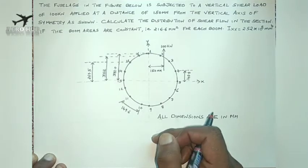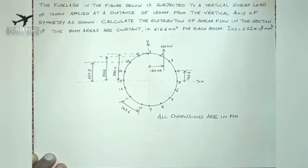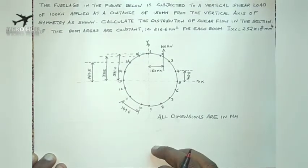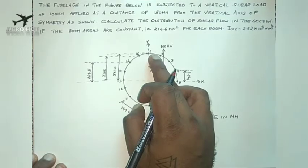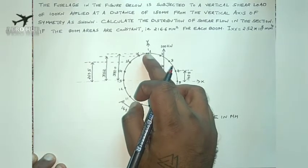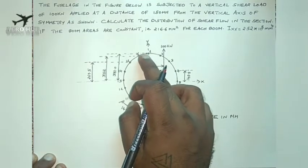The boom areas will be carrying the bending stress and the skin will be carrying the shear stress or shear flow. Therefore, we have to find out the value of shear flow for the skin panels from 1-2 to 1-16.